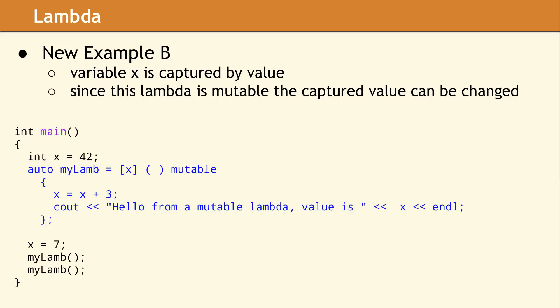We also received some questions on mutable lambdas, so here is an example showing the basic principle. In this lambda, we are capturing x by value. Normally, when you capture a variable by value, the captured variable becomes const within the body of the lambda. By adding the mutable keyword, the captured values can be modified. Since the value of x is 42 when it is captured, x still contains 42 the first time my lamb is run. As we had discussed in our lambda presentation, assigning 7 to x in the main function has no effect on the value of x that was captured.